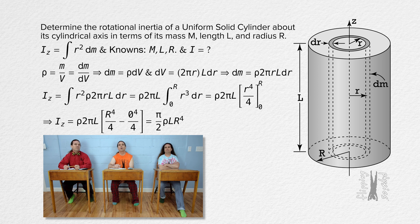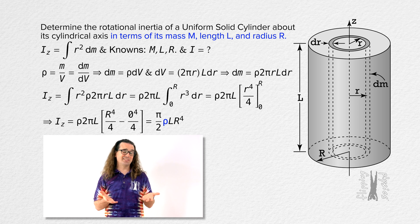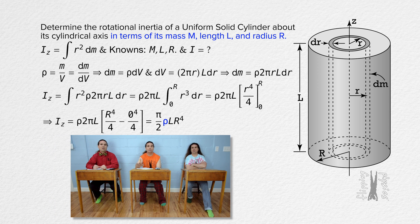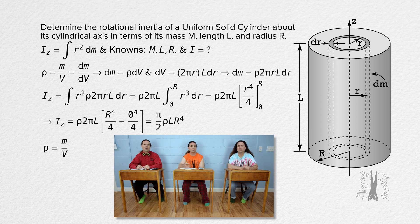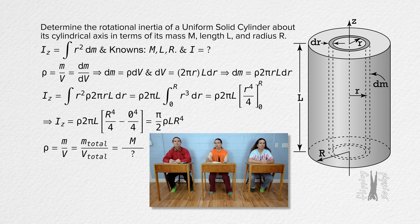Volumetric mass density is not one of our known variables — our answer needs to not have rho in it. So we need to substitute something in for volumetric mass density. We know the whole uniform solid cylinder has the same volumetric mass density as dm, so the volumetric mass density equals total mass over total volume. The total mass equals capital M, and the total volume of the cylinder equals pi times capital R squared times capital L. We can substitute that equation for density into the equation for rotational inertia.